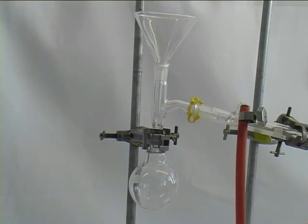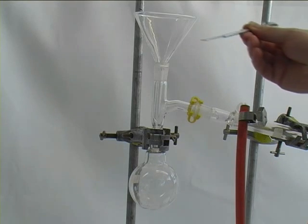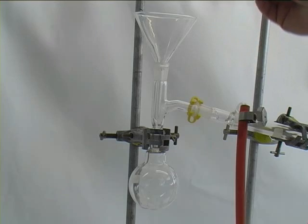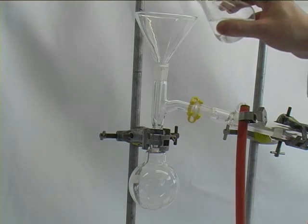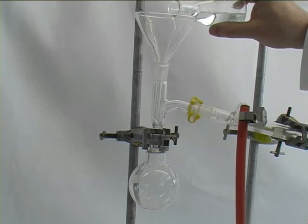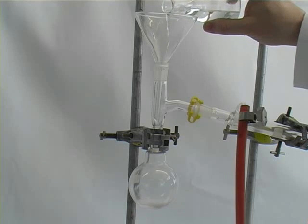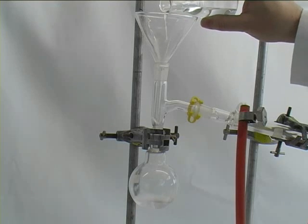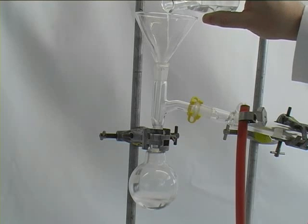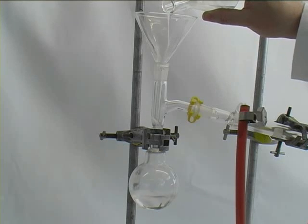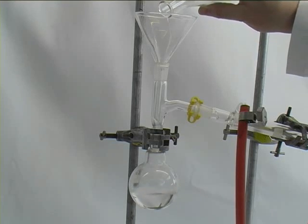Once the whole apparatus is set up, you can use a funnel to fill in some anti-bumping granules, and finally the solution which you want to separate using the atmospheric pressure distillation. Take care that when you fill it in, nothing flows down the condenser, that the solution just goes into the round bottom flask.